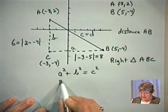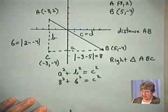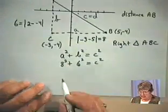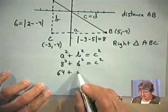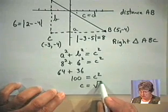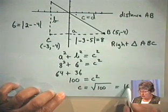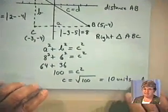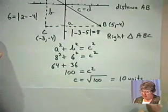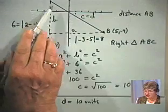So A is 8 and B is 6, giving us 8 squared plus 6 squared equals C squared. 8 squared is 64, 6 squared is 36, and 64 plus 36 is 100. So C squared equals 100, and taking the positive square root — because we're working with distance — we get C equals 10 units. So the distance between the two points, found using the Pythagorean Theorem, is 10 units.